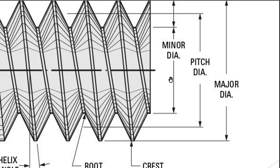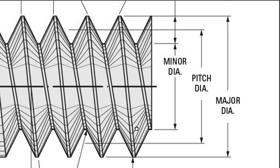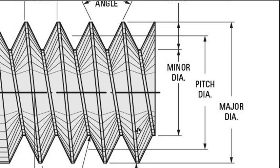The minor diameter is measured at the root portion. Next is pitch diameter. Pitch diameter is an imaginary diameter in between the major and minor diameter.